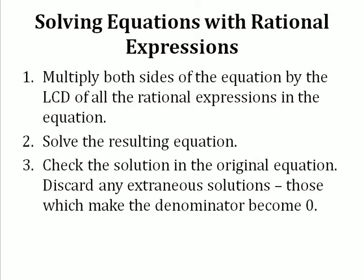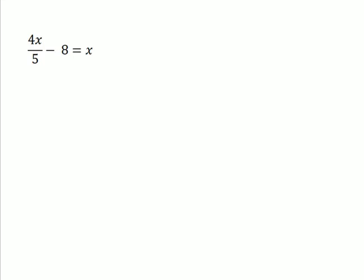Let's look at a simple equation you may have seen in elementary algebra: 4x over 5 minus 8 equals x. Remember, our first step is to find the least common denominator. In this case, the LCD is 5, so we multiply both sides of the equation by 5.